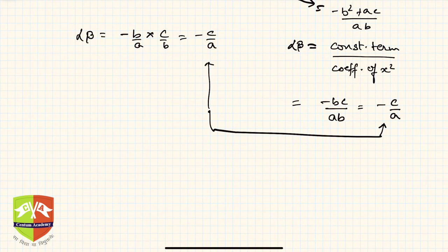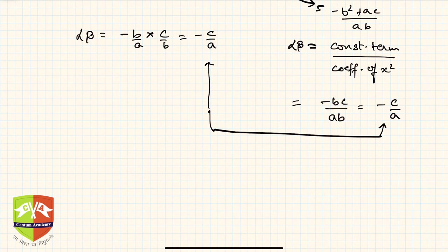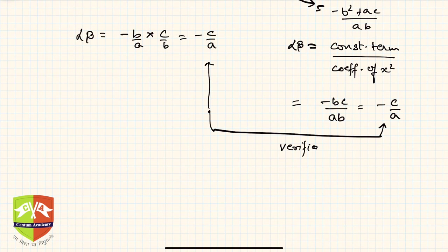Both values are equal to -c/a. We found the actual product of the zeros by multiplying them, and also from the polynomial directly without solving the equation — both match. Hence the product of zeros is also verified.